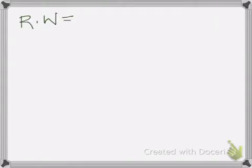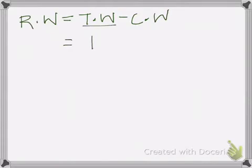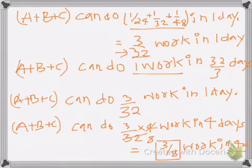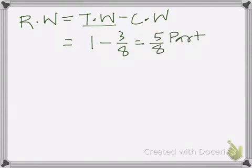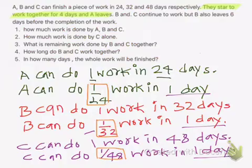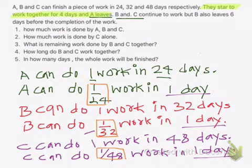The remaining work is: total work (TW) minus completed work (CW). Total work is always 1, and the completed work is 3/8. So 1 minus 3/8 equals 5/8. This 5/8 part of work is our remaining work — and since A has already left, this becomes the remaining work for B and C.